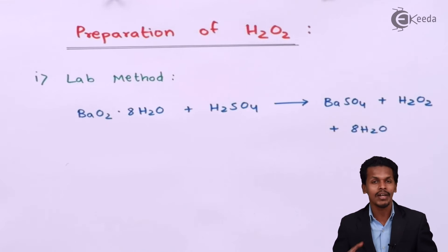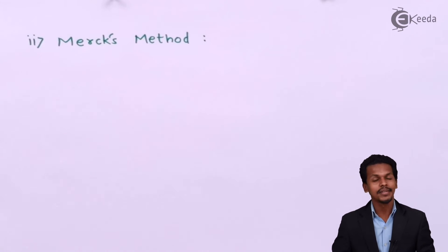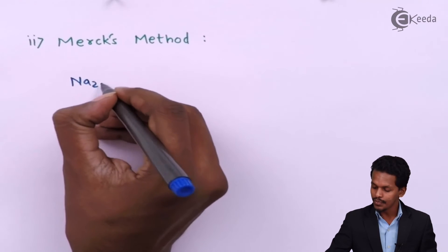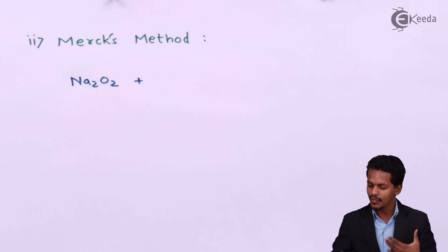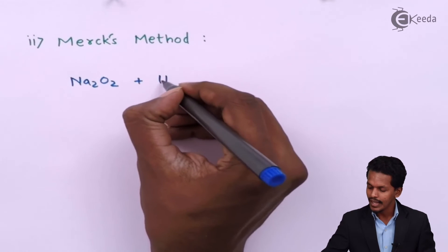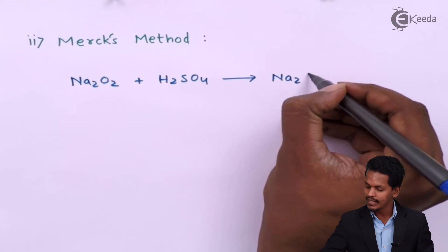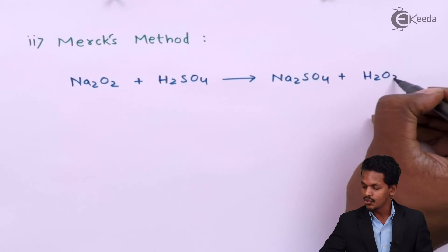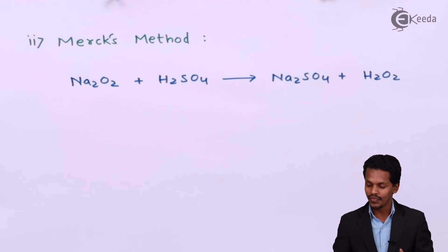The second method is known as Merck's method. In this case, we use sodium peroxide (Na2O2), which is treated with H2SO4 similarly to how BaO2 was treated. The products we obtain are Na2SO4 (sodium sulfate) along with H2O2. This is how we get H2O2 using Merck's method.